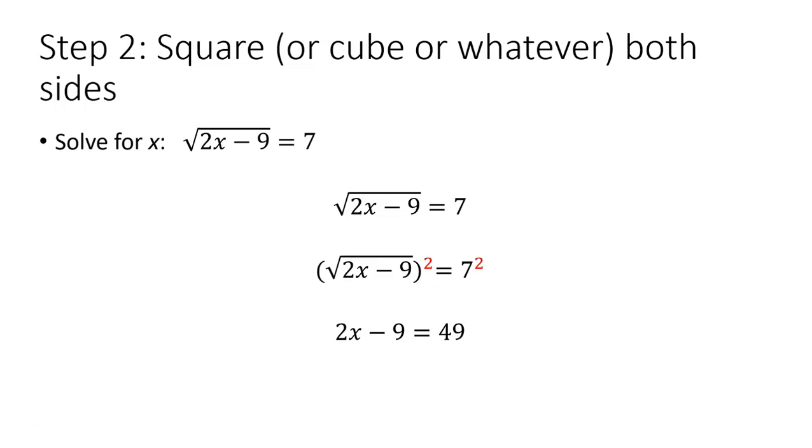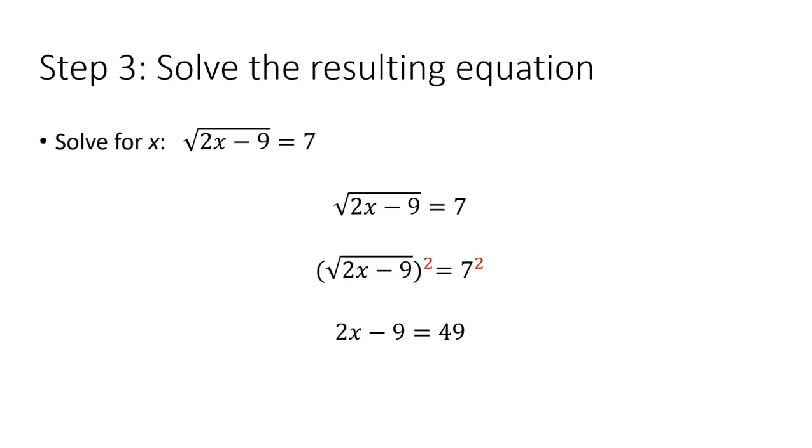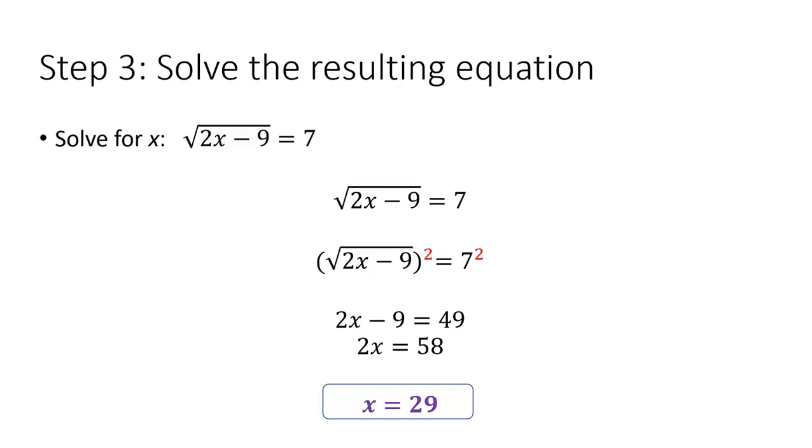Now this is a really simple equation to solve, and we will continue with our resulting equation. Adding 9 to both sides and dividing by 2, and there's our answer, x equals 29. It works! If you plug this 29 back into the equation here, 2 times 29 is 58 minus 9, which is 49, and the square root of 49 is 7.